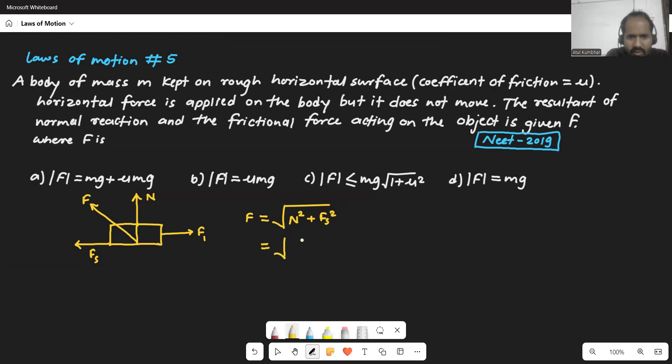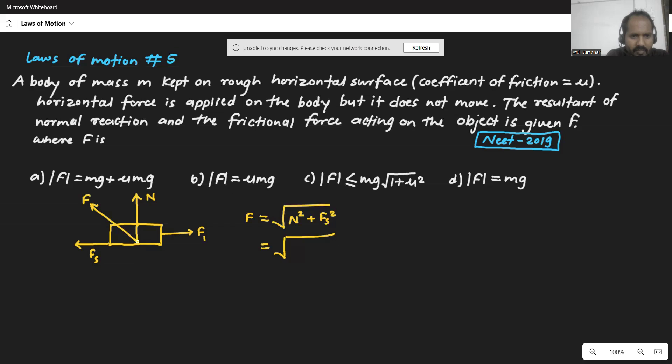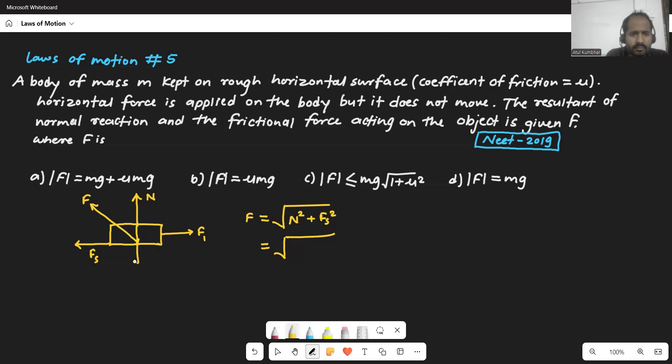So we'll put all the values here. F will be root of, now what is normal reaction? It's nothing but mg, right? Its magnitude is equal to mg, but in the opposite direction. As it is squared, there is no need to use negative and positive. So normal is mg. So here it will be mg squared. Plus friction is mu mg. It will be mu mg squared.